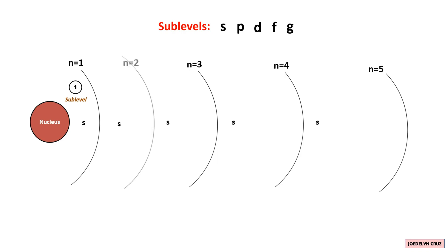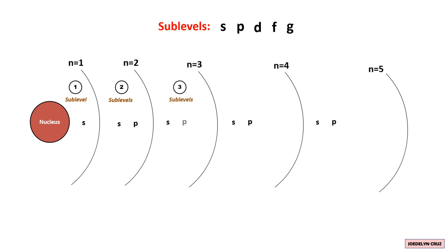In the second energy level, there are two sublevels: S and P. The P sublevel can also be found in the third, fourth, and fifth energy levels. In the third energy level, there are three sublevels: S, P, and D. The D sublevel is also present in the fourth and fifth energy levels.